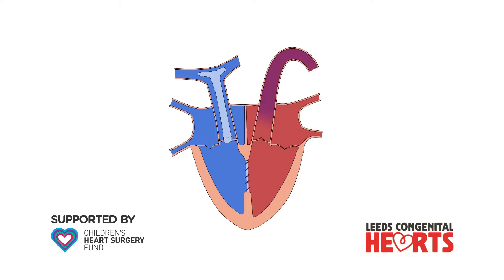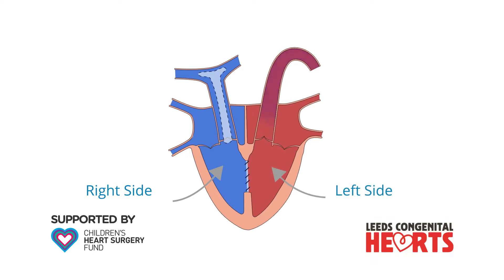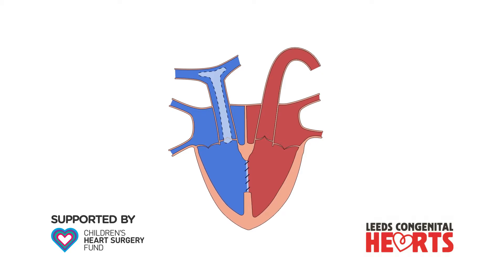Once the heart is repaired, blood that has low levels of oxygen no longer passes from the right side of the heart to the left side of the heart, and this means the patient's oxygen levels become normal. It also becomes much easier for the heart to pump blood to the lungs, and so the thickening of the right ventricle improves.